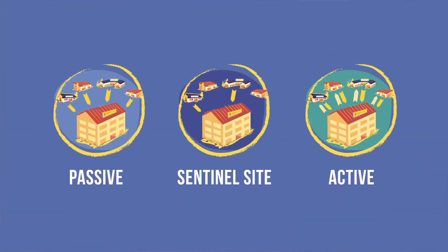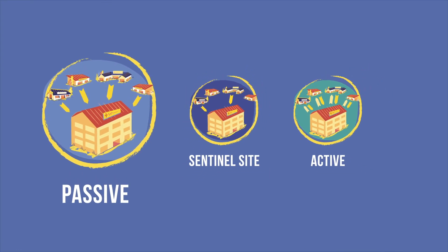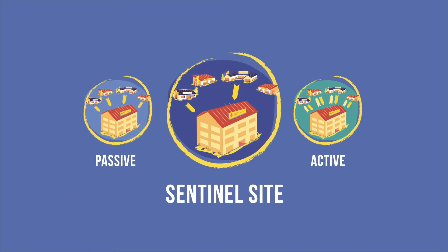You should now have an understanding of the three main types of surveillance – passive, sentinel site, and active.